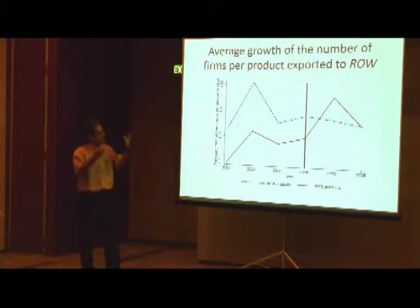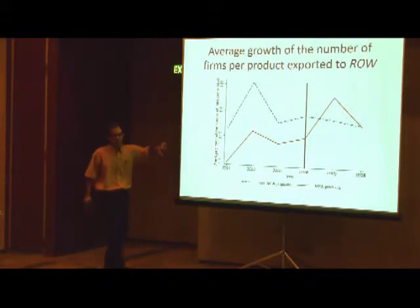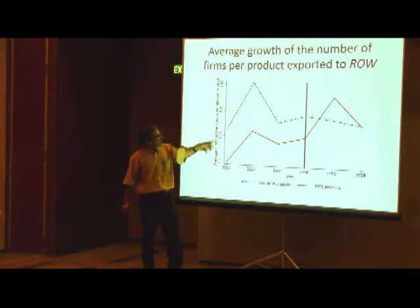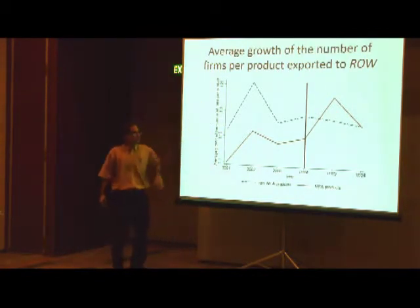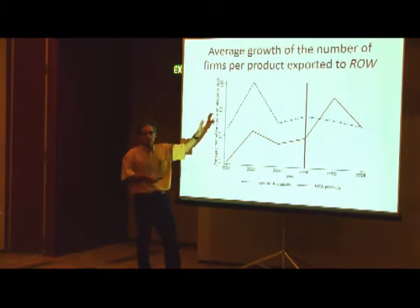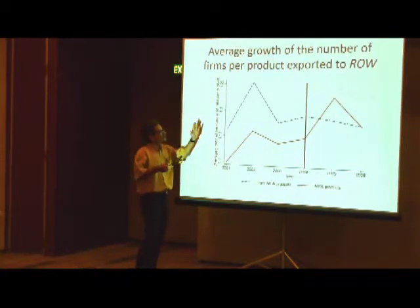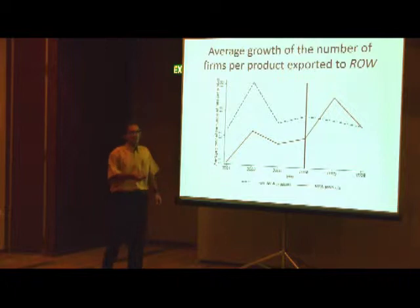We find an increasing number of firms selling previously restricted products to the rest of the world after 2005, relative to the control group before. Here's a feature that doesn't prove anything but gives a sense: we have average growth of the number of firms per product, and the distinction is between non-NFA products — the ones not restricted — and NFA products — the ones restricted. Everything is growing; the only thing that changes is how much they grow. This suggests there was a big difference before the shock, but not after the shock.